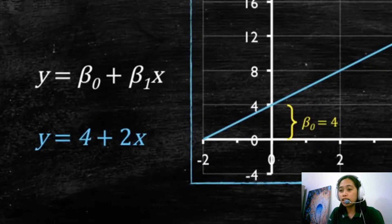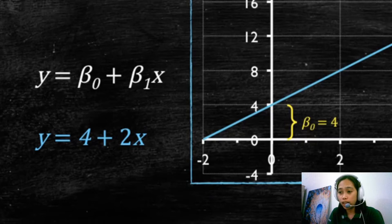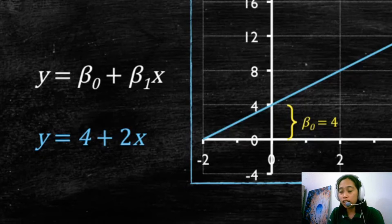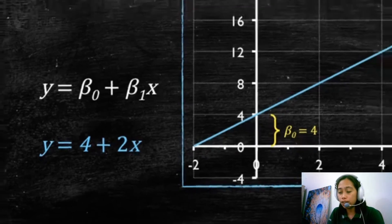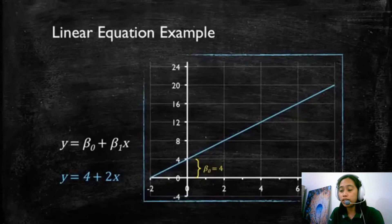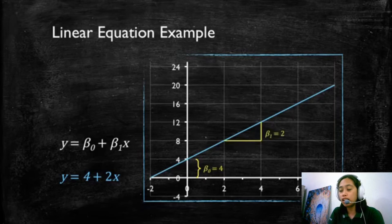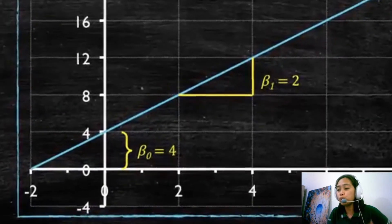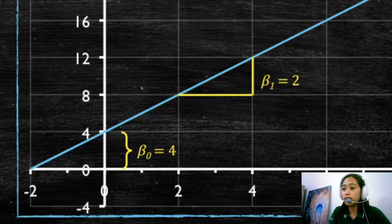So the slope in this case is 2, and it means that for every unit increase of X, Y will increase twice as much or two times as much. So we see here that X increased from 2 to 4 while Y increased from 8 to 12, twice as much.